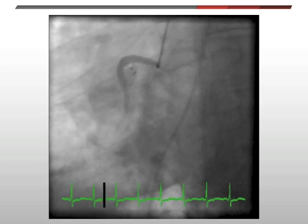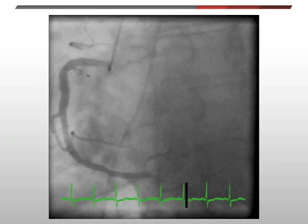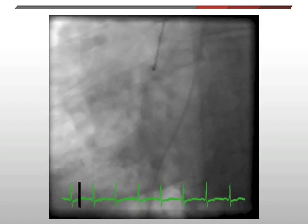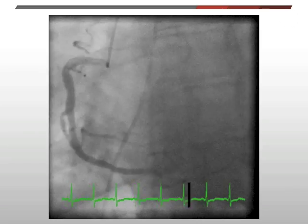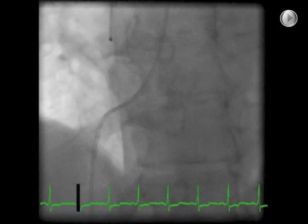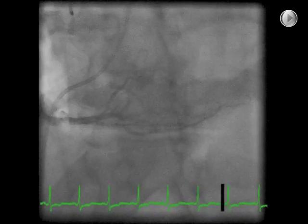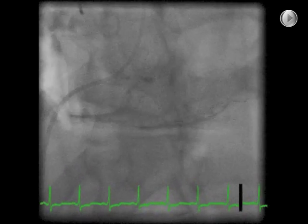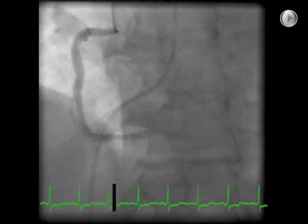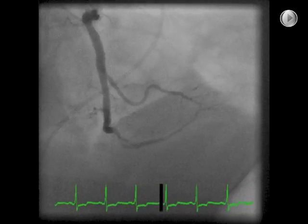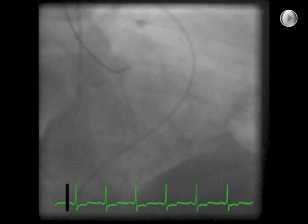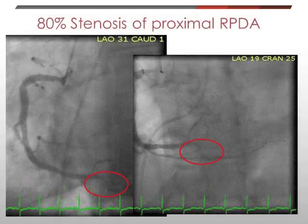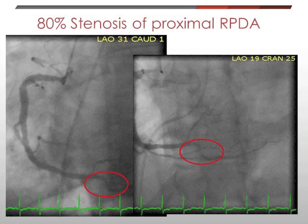This is the coronary angiogram of the RCA showing moderate diffuse disease of the RCA proper and about a 70% osteo-right PDA stenosis. The cranial view outlines this RPDA stenosis in more detail — it appears to be somewhat more significant in this view, maybe up to 80%, and as one can see, it's relatively focal. The final angiogram of the RCA demonstrates that the area supplied by the PDA is relatively large. In summary, the RCA has moderate diffuse disease with an 80% stenosis of the proximal RPDA, which is a relatively large vessel supplying the inferior wall.